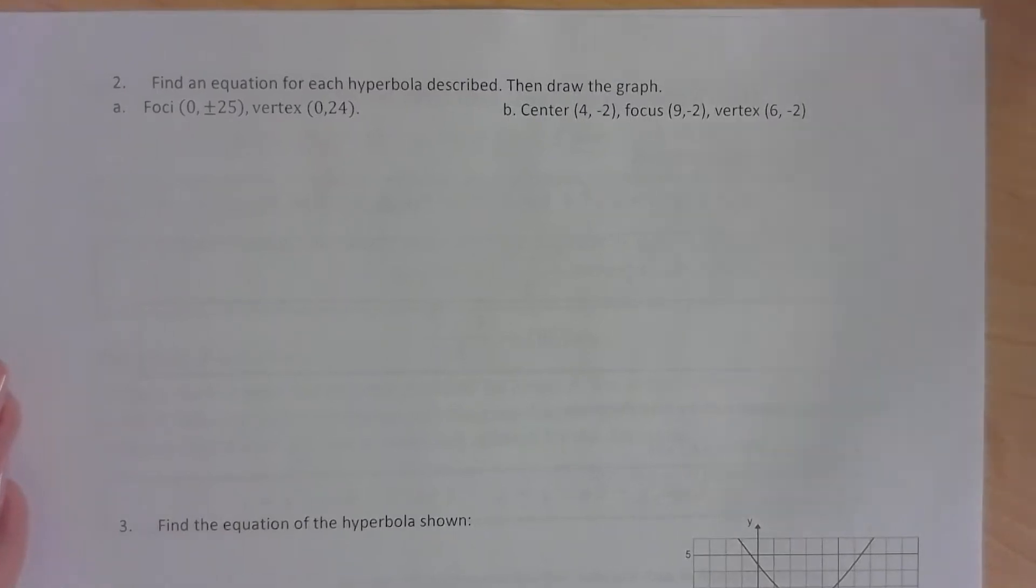All right, so now that we have learned how to graph a hyperbola, let's talk about how to write the equation of a hyperbola. So we have foci that are at 0 plus or minus 25 and a vertex that's at 0, 24.